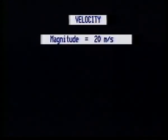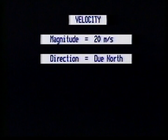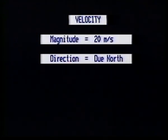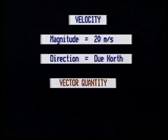Velocity is displacement divided by time. It takes place in a given direction. This is called a vector quantity.